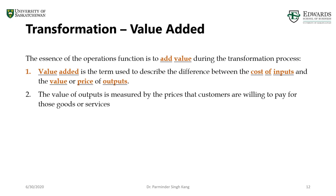The whole idea is to have your operations more efficient and effective. At each activity of the transformation process, we are converting material or information into goods and services, so value is added during the transformation process at each step. From an operations management viewpoint, value-added can be described as the difference between the cost of inputs and the price of output.